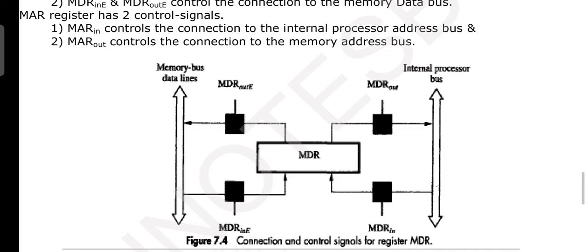Whenever MDR is taking the data from internal processor bus, MDR_in to be activated. Whenever it is taking the data from memory bus data line, MDR_in_E is to be activated. Similarly, whenever this is sending the data towards internal processor bus, then MDR_out to be activated. If it is sending the data, that is address value, actually towards the memory bus data line, then MDR_out_E to be activated.